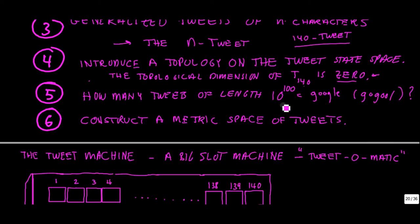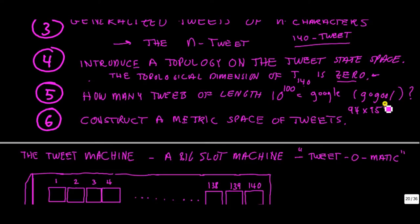We can also do some fun problems. We found a really big number — the tweet number — how many possible tweets are there: that's 94 times 95 to the 139th power. That's the number of possible distinct tweets that obey the rules of making tweets on Twitter.